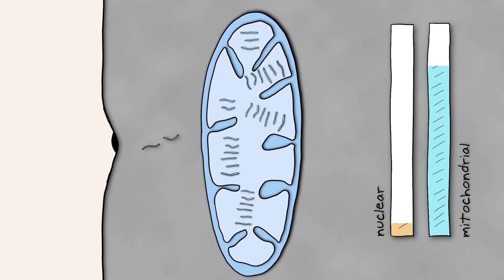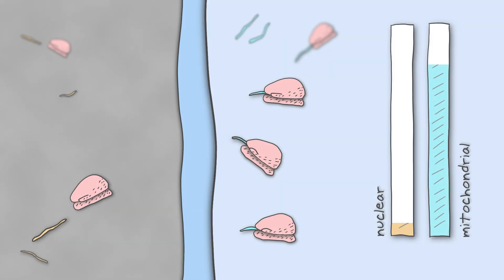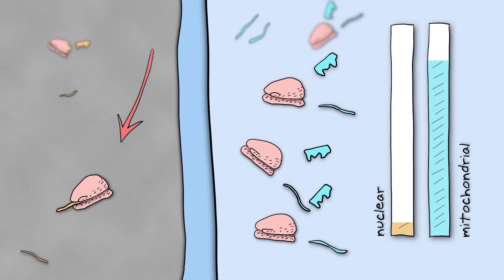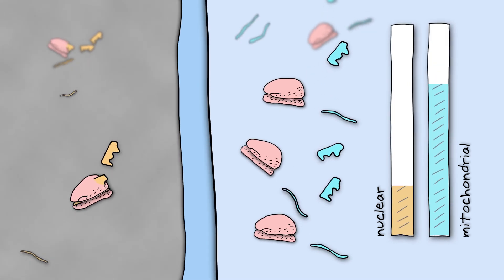Next, the RNAs get translated into proteins, and here's where the seesaw tips. The mitochondrial RNAs become proteins slowly, while RNAs from the nucleus get turned into proteins about 100 times faster.